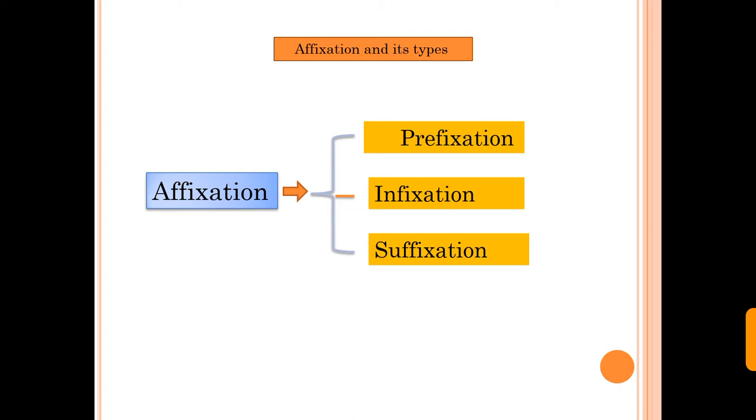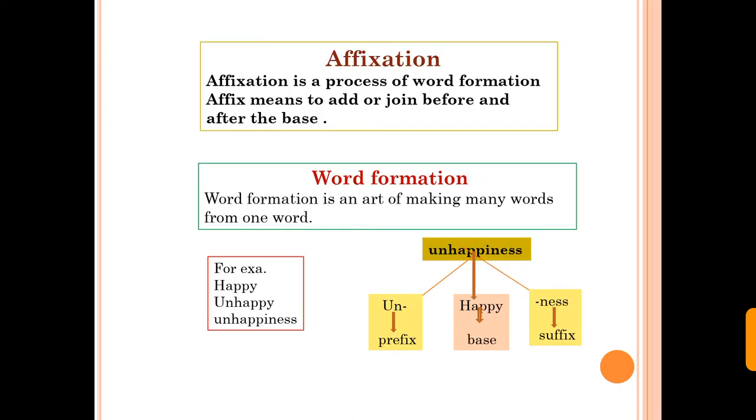The first process affixation has three kinds: prefixation, infixation, and suffixation. Before going to this kind, first we are going to see what is affixation. Affixation is the process of word formation. Affix means to add or join before the word or after the word which is a base. Word formation is an art of making many words from one word.